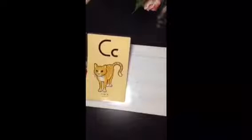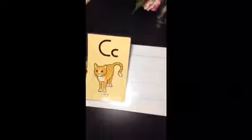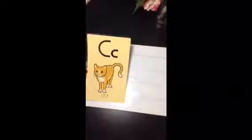Next is the letter C. C is a consonant. C makes the sound K. What helps us remember is always looking at the picture cat. During our letter drill, we say C, cat, K.